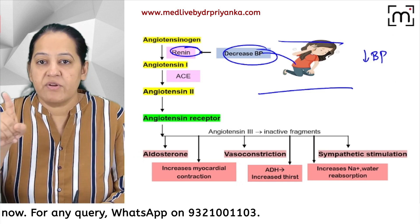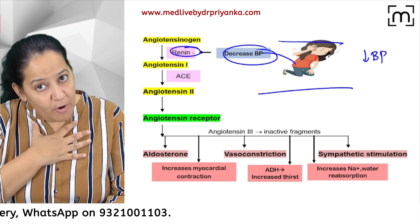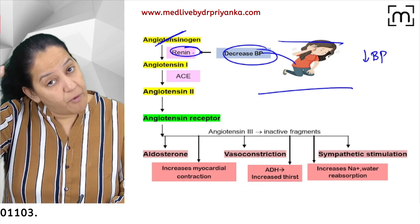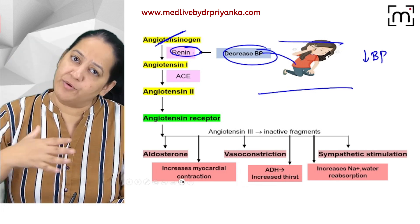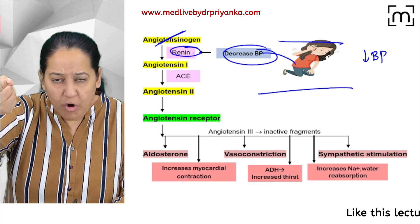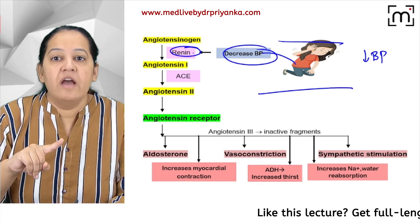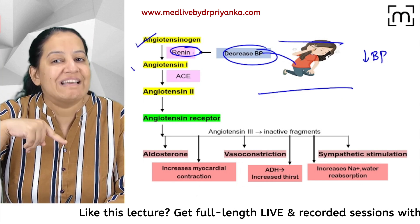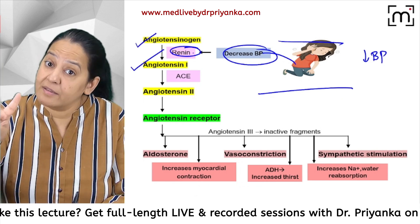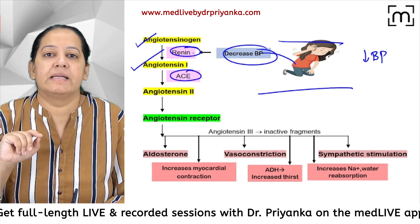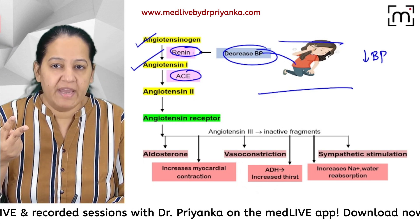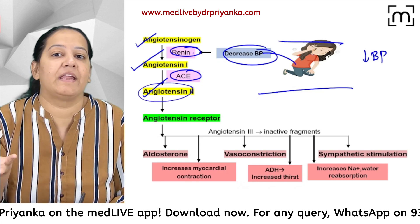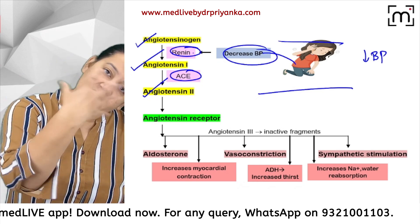Normally, renin is not present in the blood. This renin will come into the blood, and in my blood I already have angiotensinogen — a protein formed by the liver. It's inactive and cannot bind with AT1 receptor. When renin comes, it converts angiotensinogen to Angiotensin 1. Then from the lungs, another enzyme — ACE (angiotensin-converting enzyme) — converts Angiotensin 1 to Angiotensin 2. This Angiotensin 2 is the main hero.